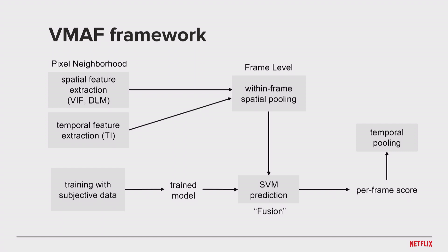Going to the overall VMAF framework — you can think of it as a two-stage process. In the first stage, spatial and temporal features are extracted over a pixel neighborhood of each individual video frame by calculating elementary metrics. For example, VIF (Visual Information Fidelity) and DLM (Detail Loss Metric). For the temporal feature, we use a Gaussian filter on frame differences, doing temporal and spatial averaging over an entire frame to get a prediction in each of those metrics. These features offer basic evidence of perceptual quality of the content.